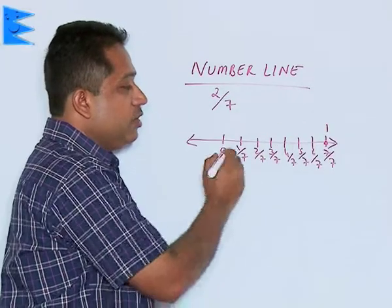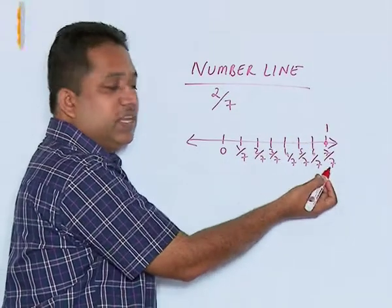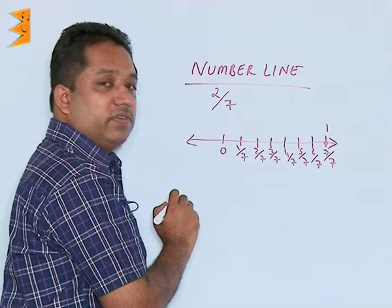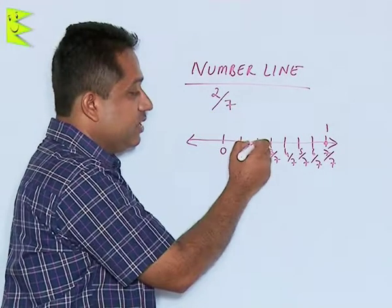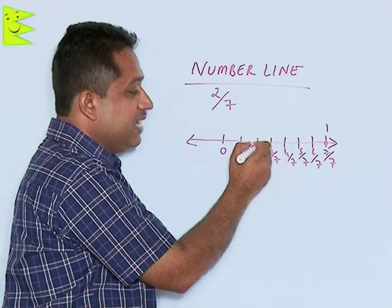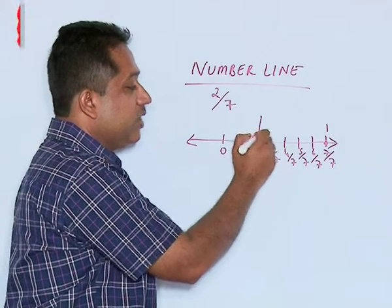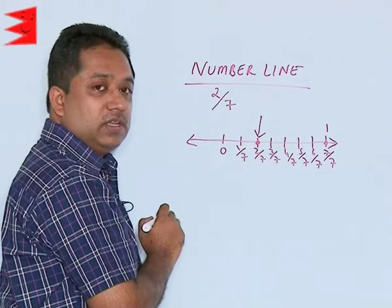So between 0 and 1 we make 7 equal divisions. We have to represent 2 by 7, which is the second division after 0. So this value is 2 by 7.